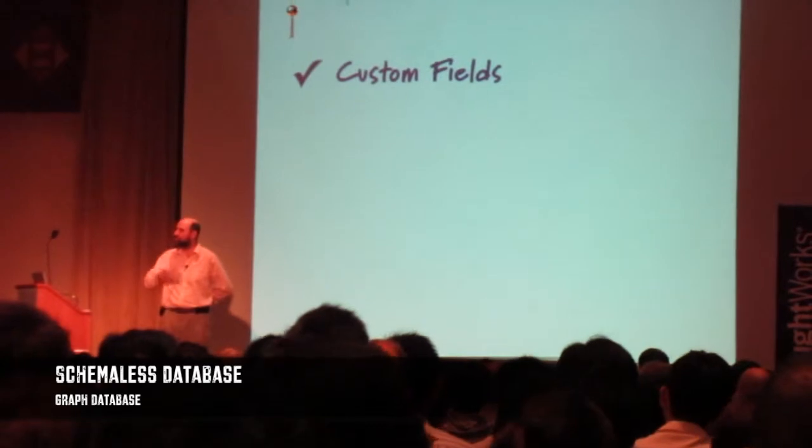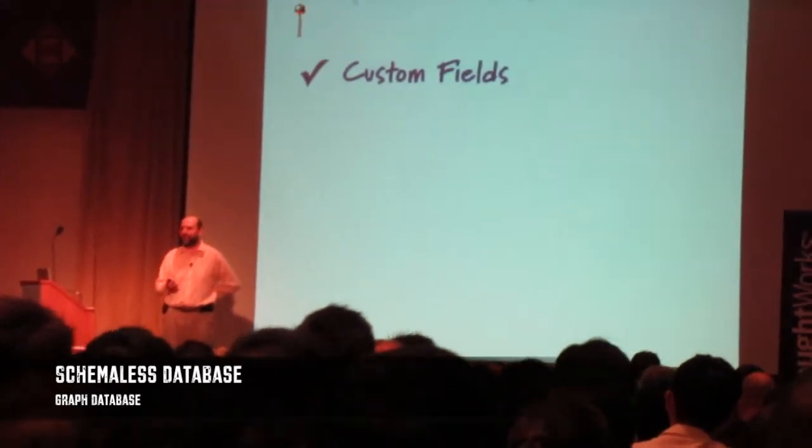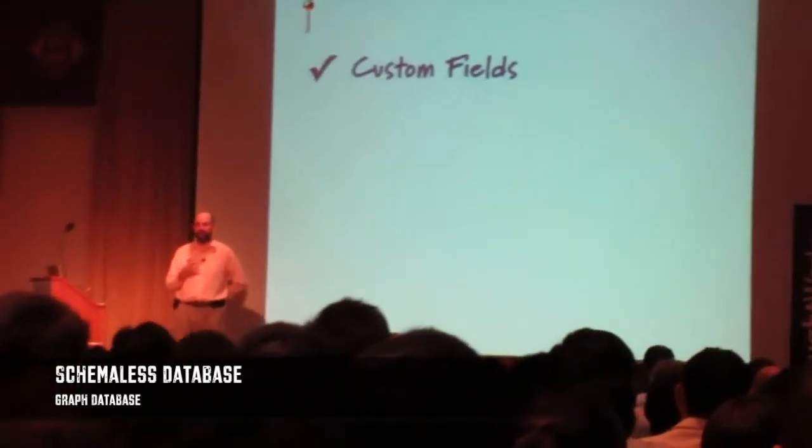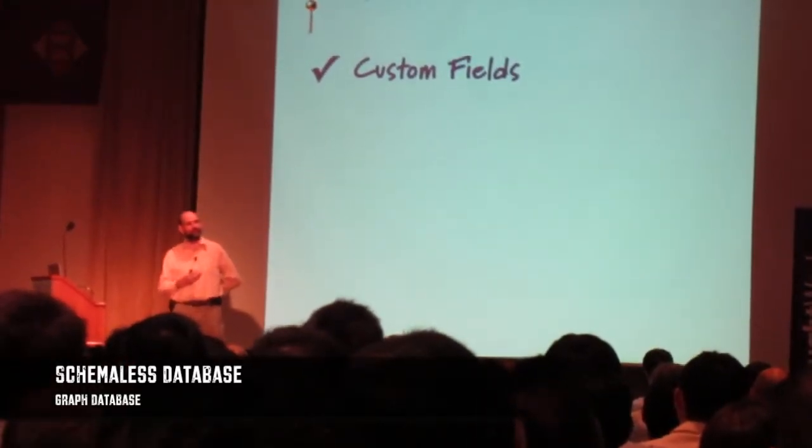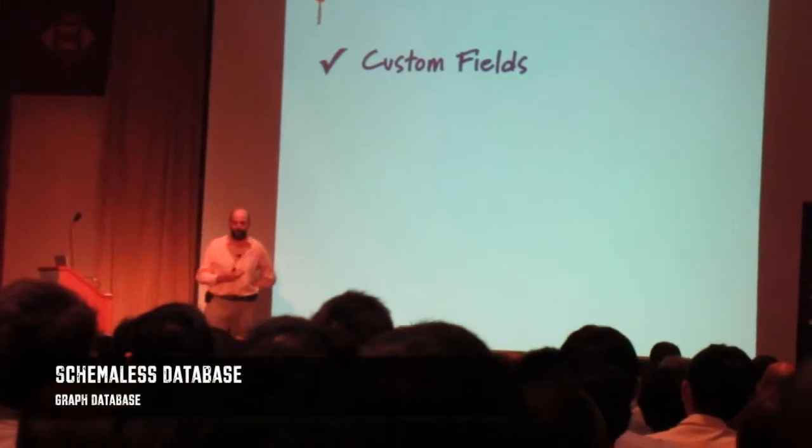If you've ever had to do custom fields in an application where you want to allow users to attach any information to the customer that they might want to store, trying to store that in a relational database with a thick schema can be a real pain. You see things like custom field one, custom field two. What's that?